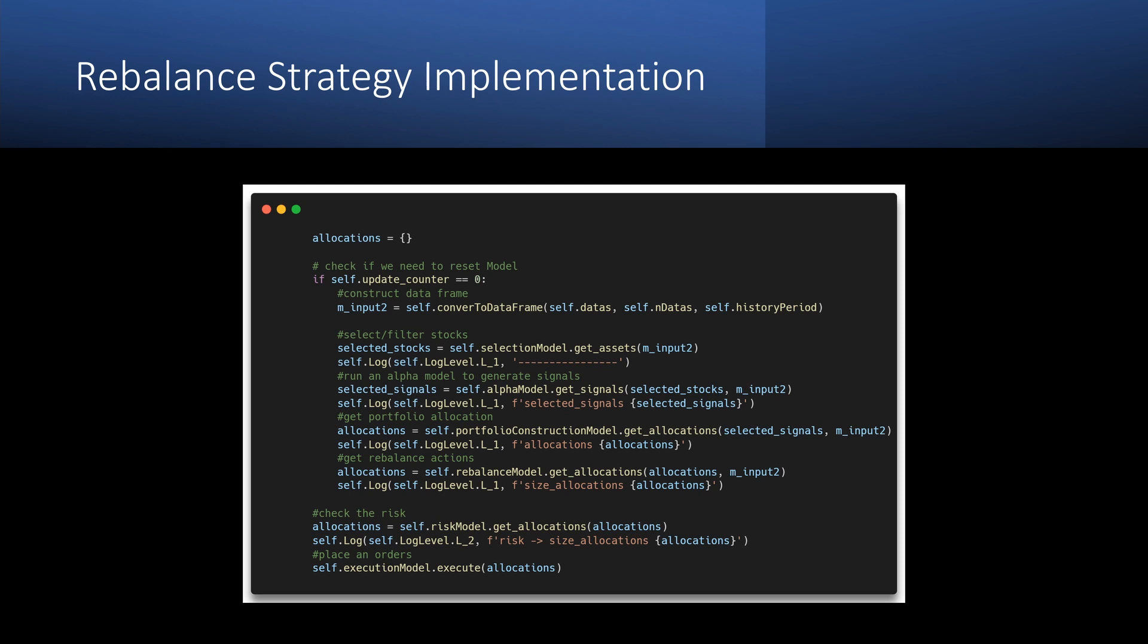If you check the code of the rebalancing strategy, you will find the implementation of all these steps. You may see that before the selection model, I call the function which returns a data frame only with the close prices. I did it because for me it's enough to have only the close prices. Now let's have a brief overview of the implementation of our models.